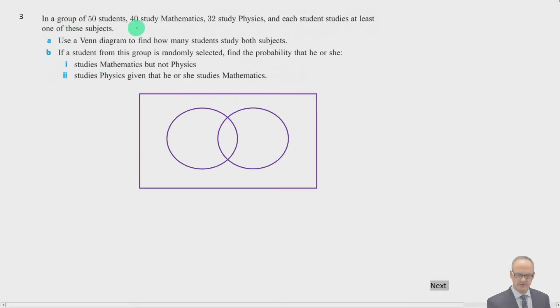Right. And our last question here. In a group of 50 students, 40 study mathematics, 32 study physics, and each of the students studies at least one of these subjects. So we know that 40 plus 32 is equal to 72. But there's only 50 students, and they all must study maths or physics. So therefore the overlap must be 22. And so the rest of the maths in here is going to be 18, and the rest of the physics is going to be 10. So there we go. We've drawn a Venn diagram. So we found how many students study both subjects.